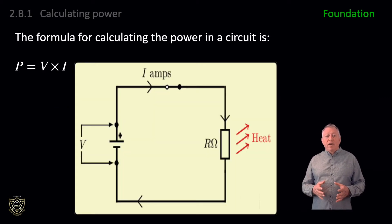The formula for calculating the power in a circuit is P equals V times I, where P is the power in watts, I is the current in amps, and V is the voltage or potential difference in volts. If we are given the voltage across a resistor and the current through it, we can work out the power. In the diagram, the cell's terminal potential difference of V volts is driving a current of I amps through a resistor of R ohms. The power dissipated by the resistor is I times V.